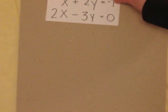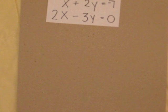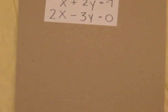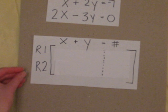This is Gaussian elimination in plain English. So say we have x plus 2y equals negative 7, and 2x minus 3y equals 0. If we're going to use Gaussian elimination to solve that, we're going to make this general form.